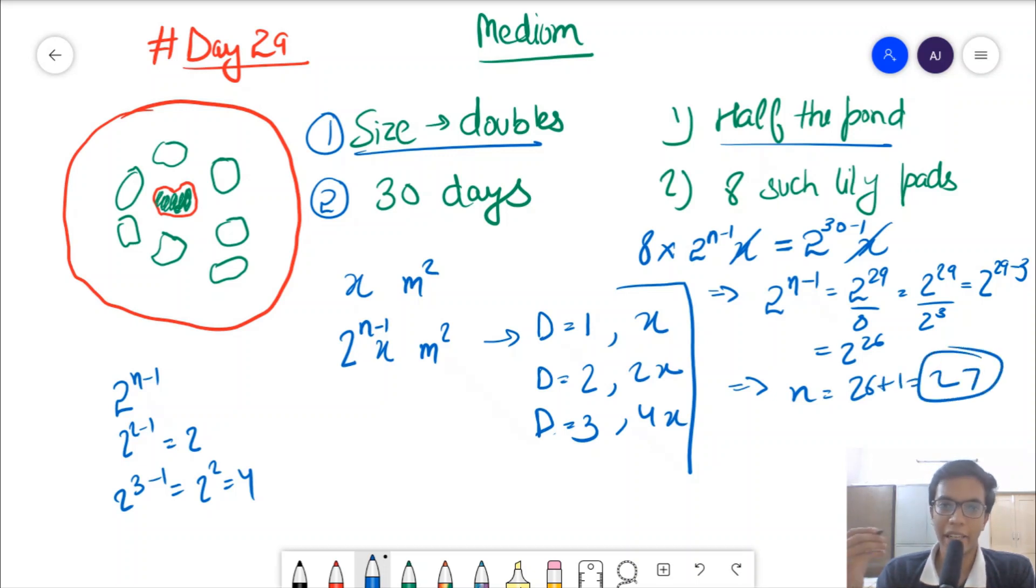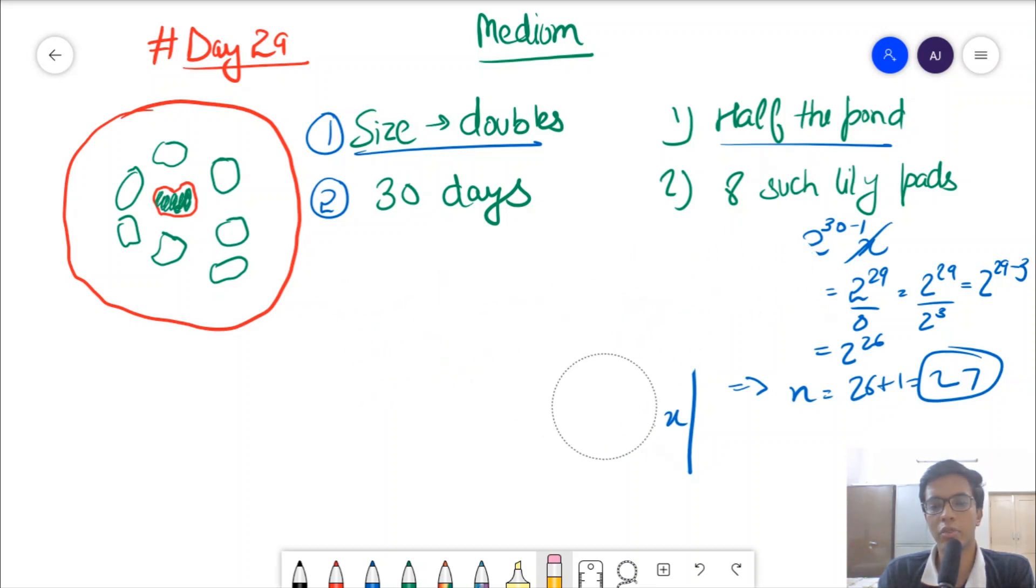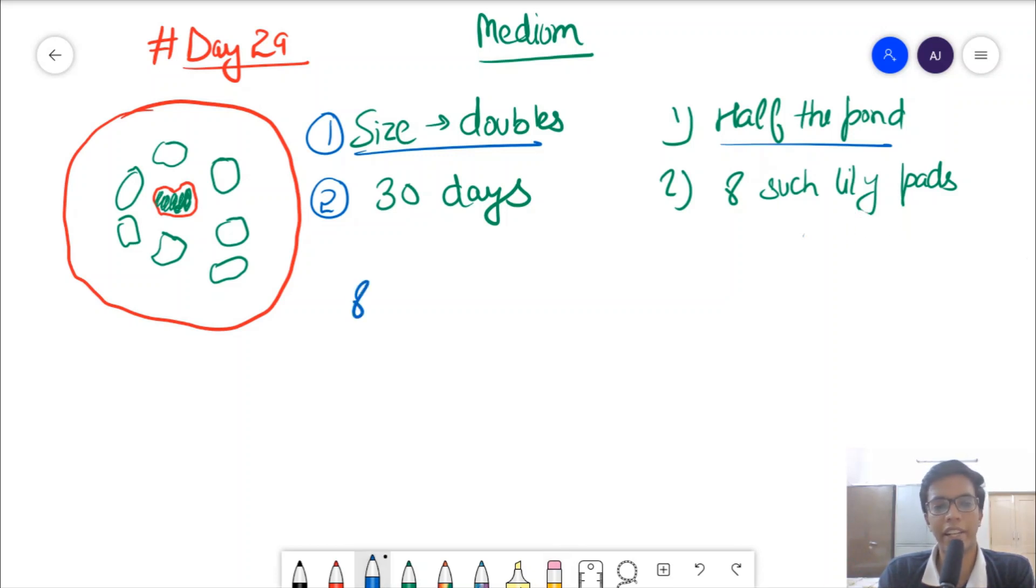Second method to think this part is, simple logical deduction. If on first day I have 8 lily pads, the area is something 8 times a. Next day it's going to be 16 times a.